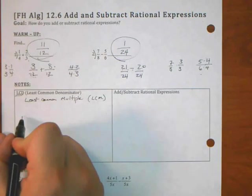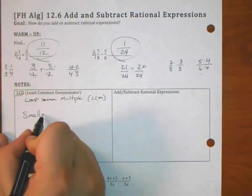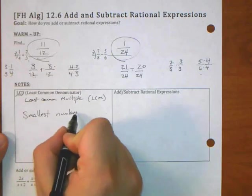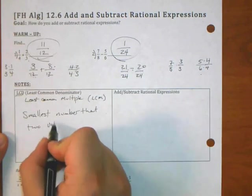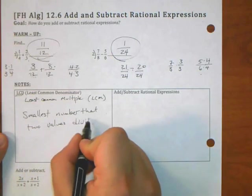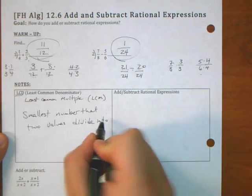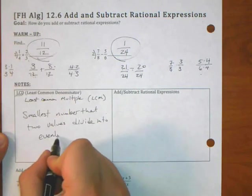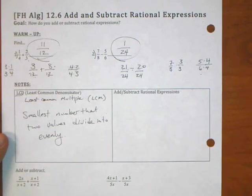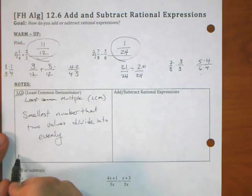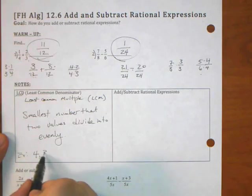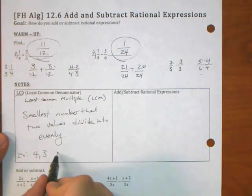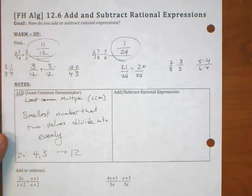We're going to find the least common multiple. It's the smallest number that two values divide into evenly. In the example up there, the least common denominator, or in this case, the least common multiple between four and three, that was twelve. Twelve is the smallest number that both four and three go into evenly.